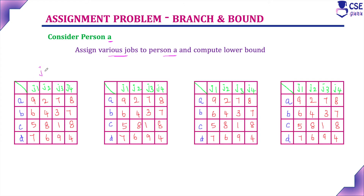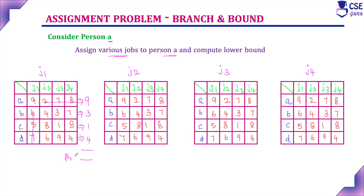Assigning job 1 to person A: the cost is 9. Since the same row and same column are now excluded, for person B the least available cost is 3, for person C it is 1, and for person D it is 4. The lower bound value for this assignment is 17.